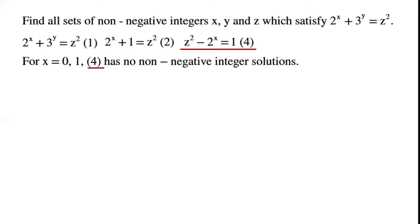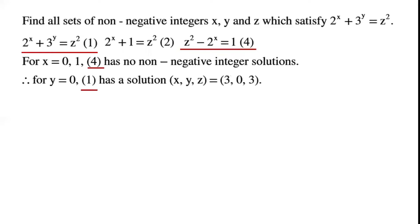From Mihailescu's theorem, the only solution of equation 4, and therefore equation 2, for x greater than 1 is z equals 3 and x equals 3. For x equals 0 or 1, equation 4 has no non-negative integer solutions. So for y equals 0, equation 1 has the solution (x, y, z) equals (3, 0, 3).